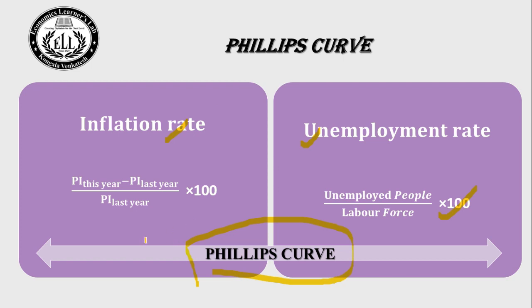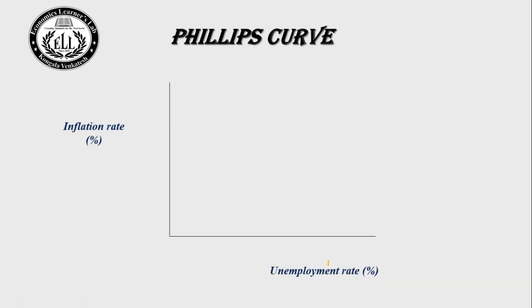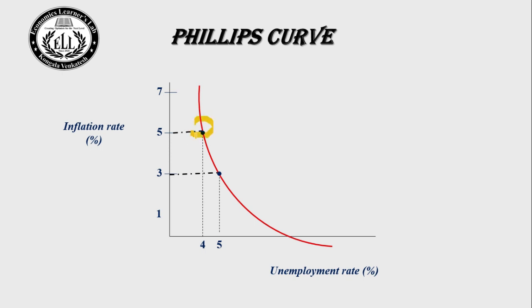In this picture you can see that if one goes up, the other one comes down. In the graph, the horizontal axis has the unemployment rate and the vertical axis has the inflation rate. The Phillips curve is showing two points: at one point the inflation rate is 5% and the unemployment rate is 4%; at the other point the inflation rate is 3% and the unemployment rate is 5%. The Phillips curve shows an inverse relationship between the inflation rate and unemployment rate.